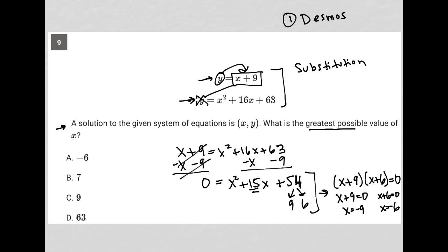And of course, the question asked for what is the greatest possible value. Well, negative 6 is greater than negative 9, so there's our answer. And negative 9 is not even listed here as well, so that's also something to think about. But negative 6 is the answer to this question, answer choice A.